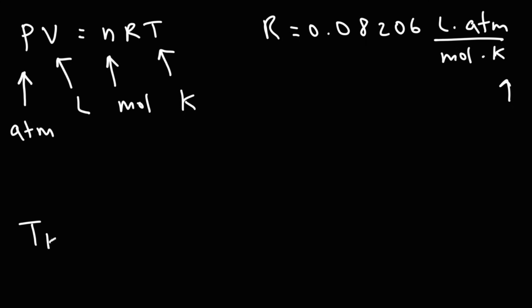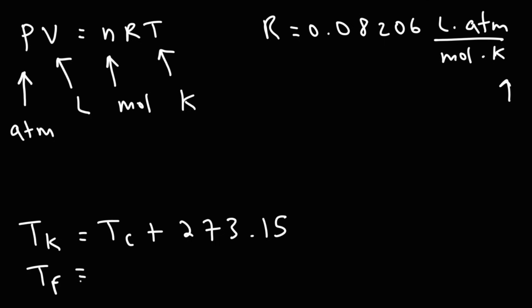If you need to calculate the Kelvin temperature and you know the Celsius temperature, you add 273.15. If you're given the Fahrenheit temperature, you can calculate the Celsius temperature using the standard conversion formula.